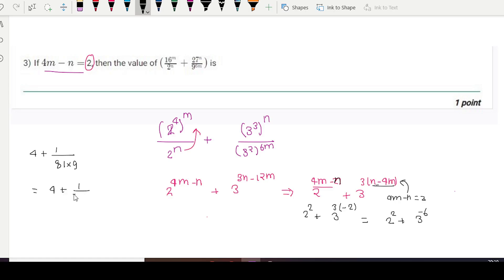So 4 plus 1 divided by 79. Let me calculate this. So it will give sum of between 4.0013. Ok.